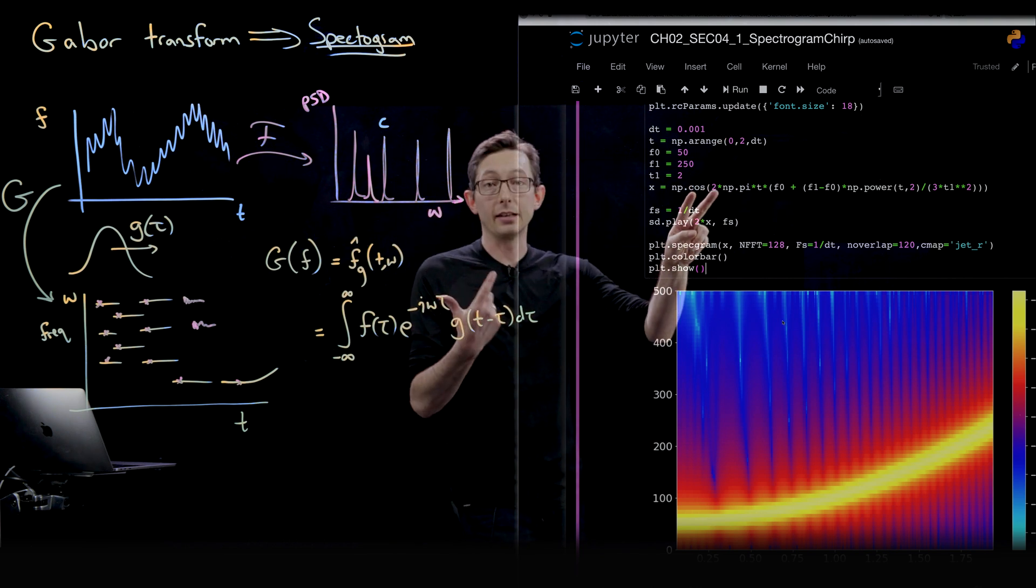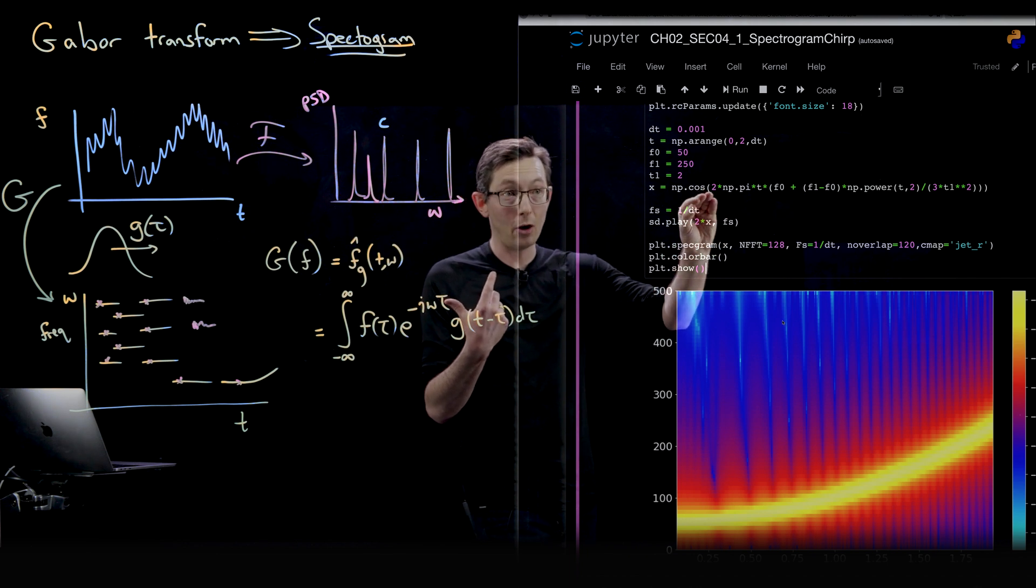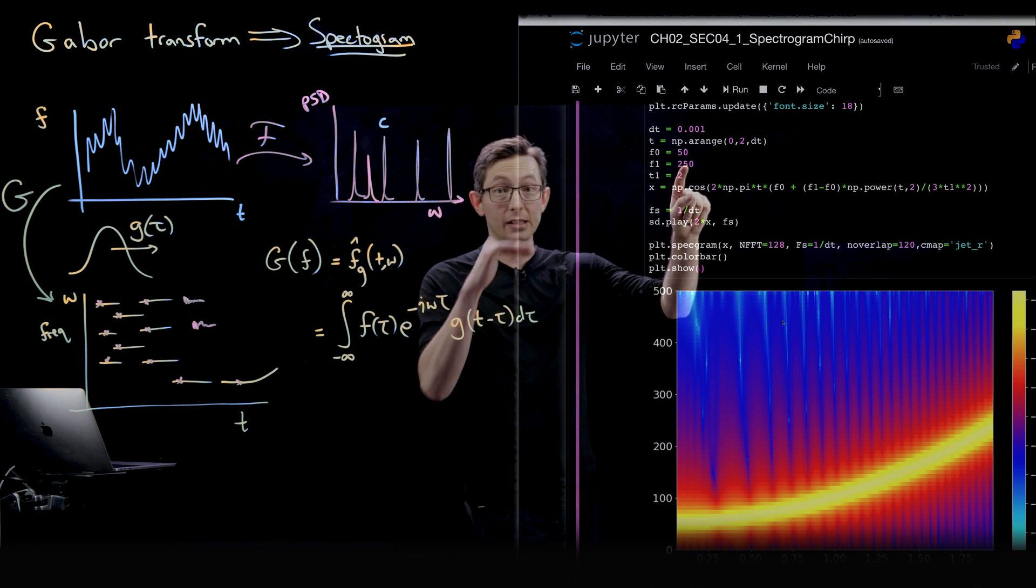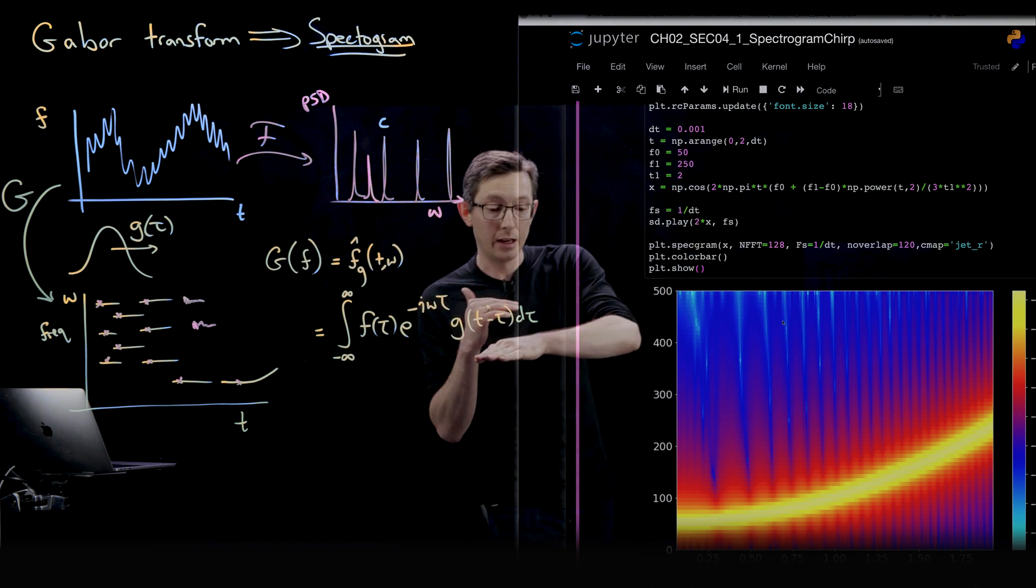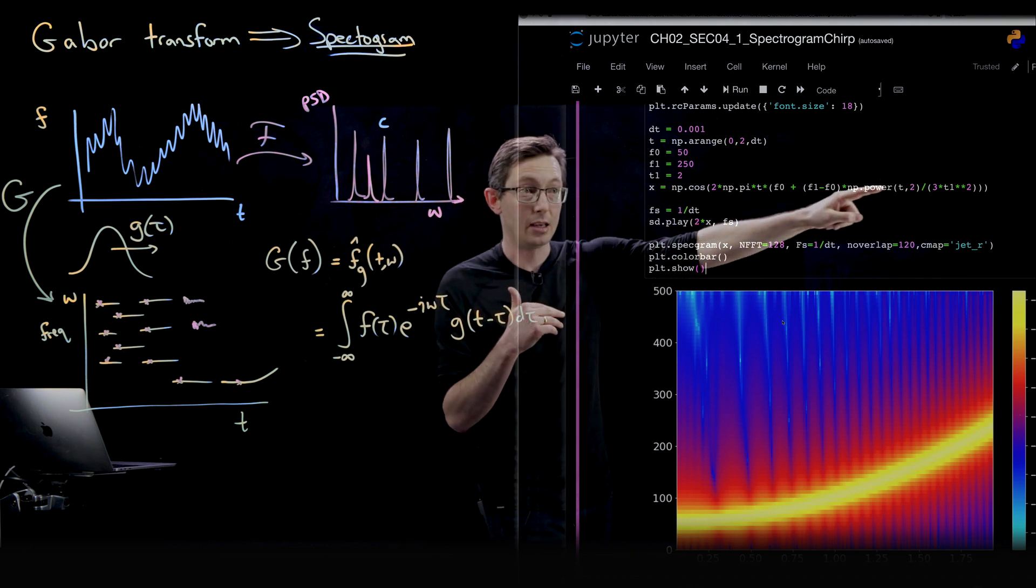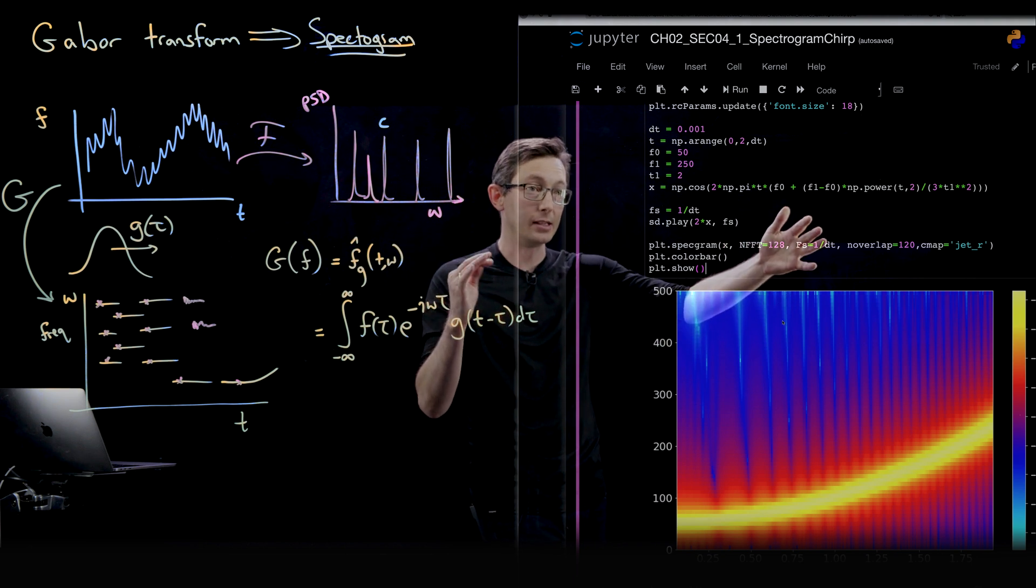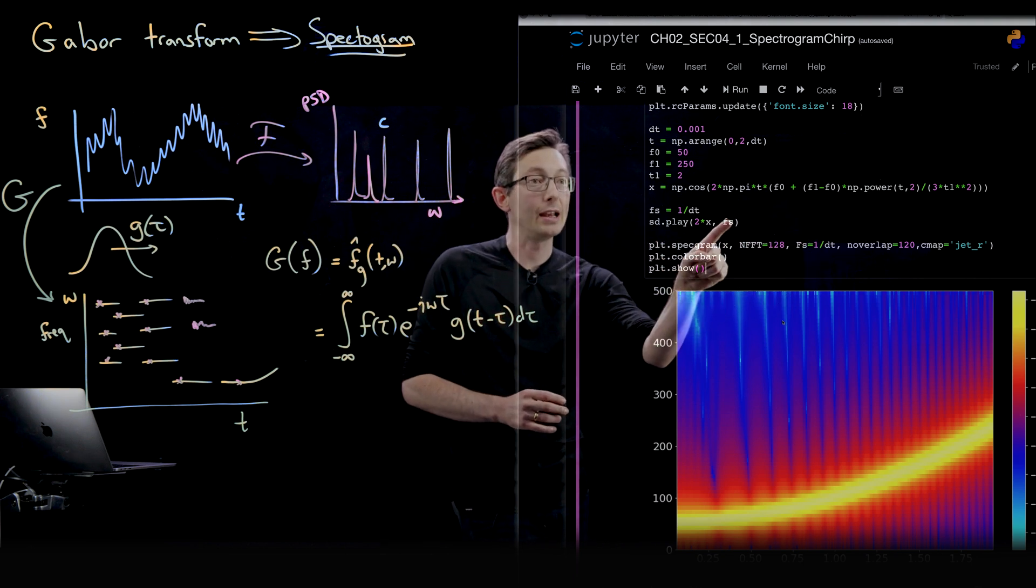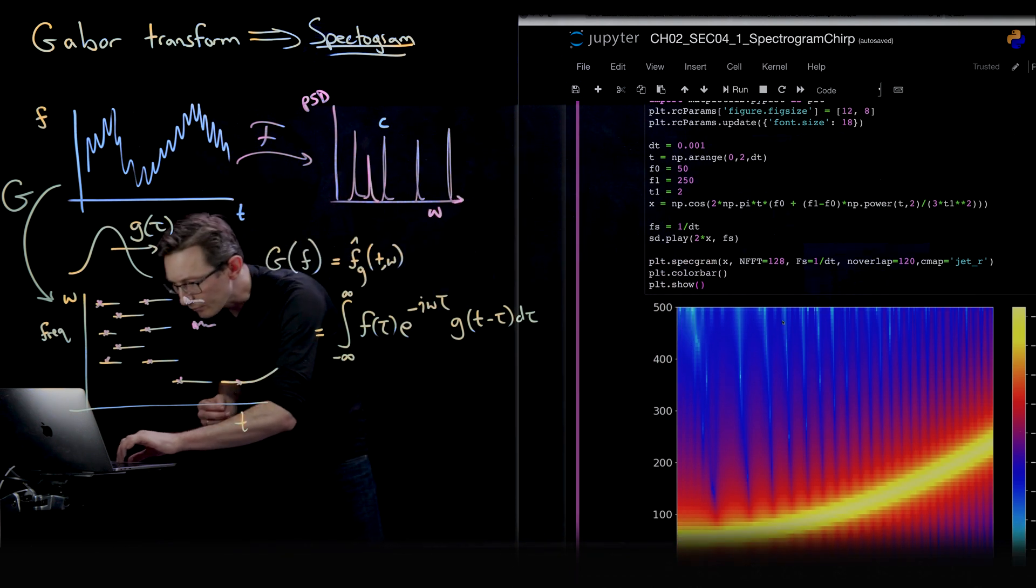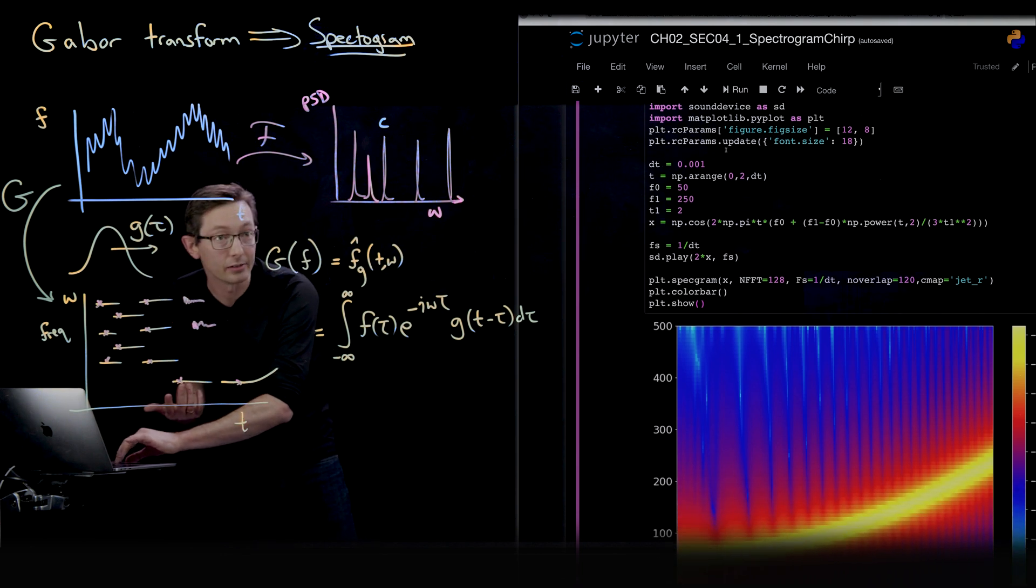And I'm going to have essentially an audio signal which is going to go from a low frequency 50 hertz tone to a high frequency 250 hertz tone in kind of a quadratic chirp path. That's what this function here does, is that it evolves in time going from low frequency to high frequency. I'm going to play the sound here using this sd play code here. And you'll have to import sound device as sd for this.